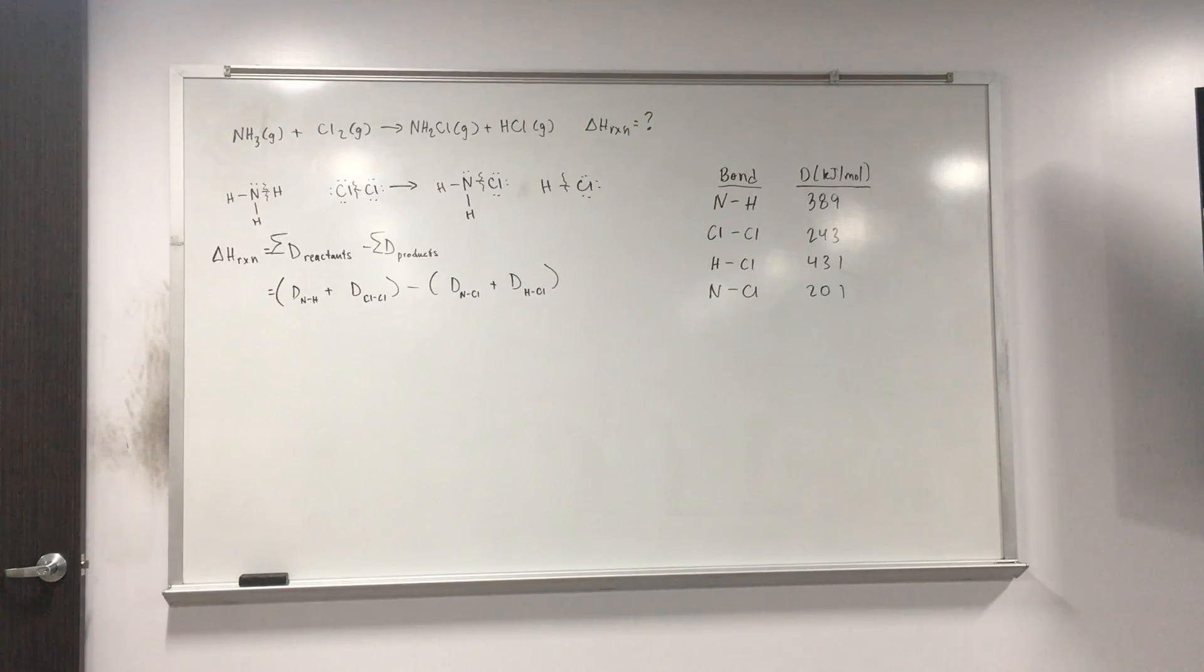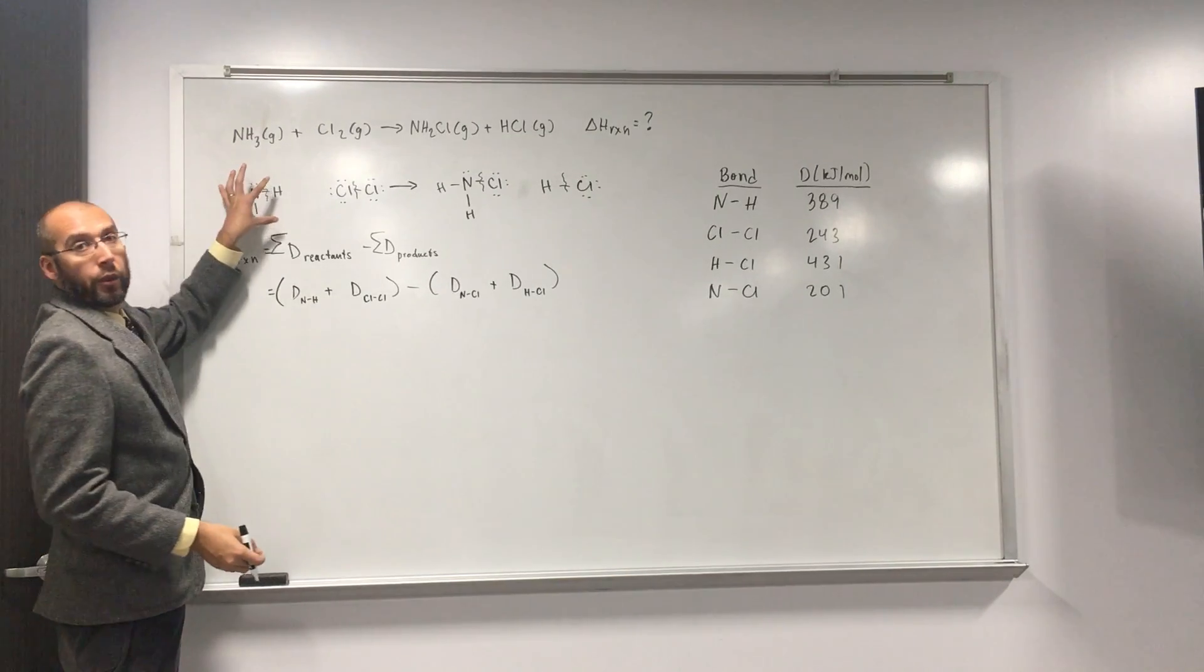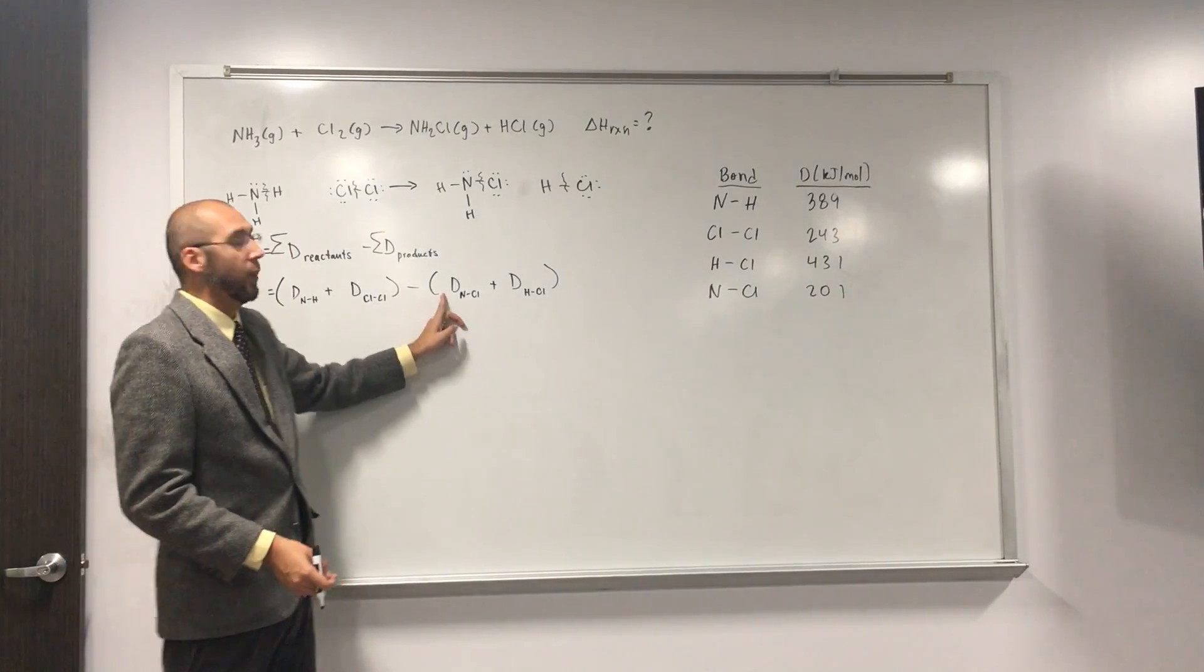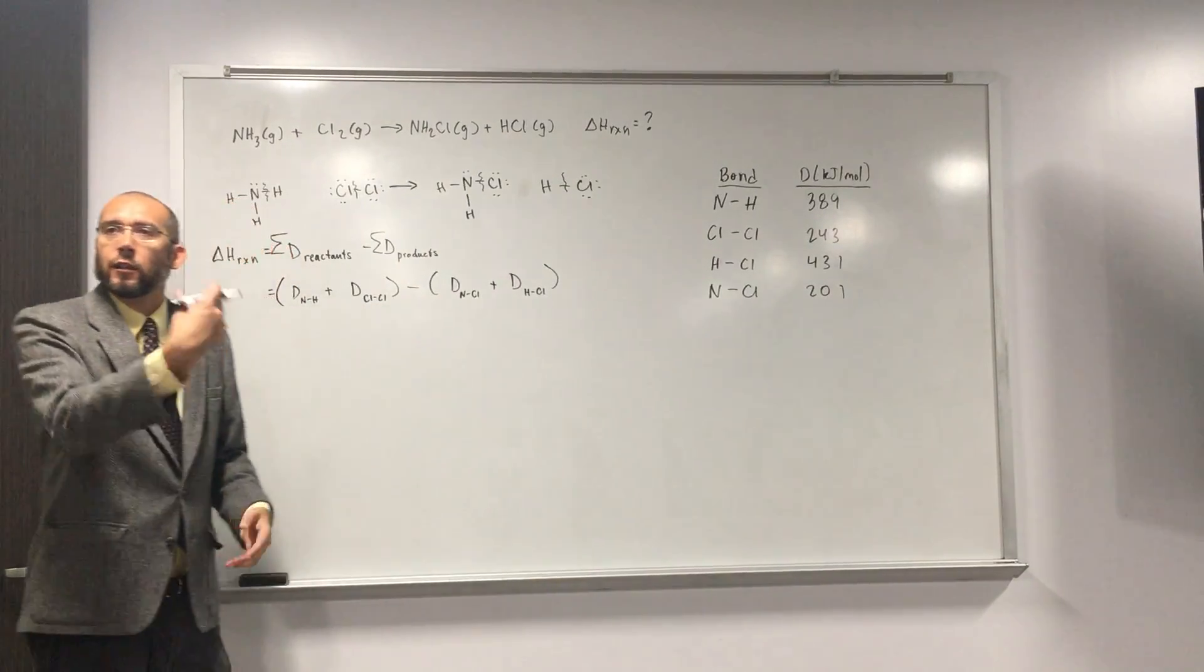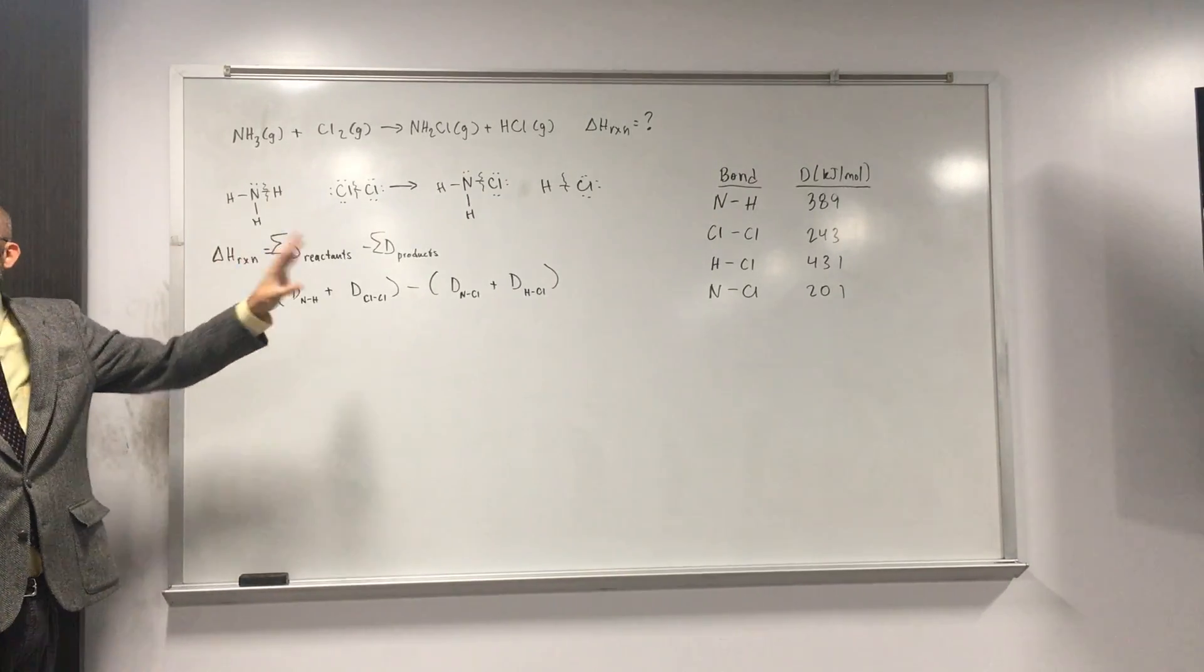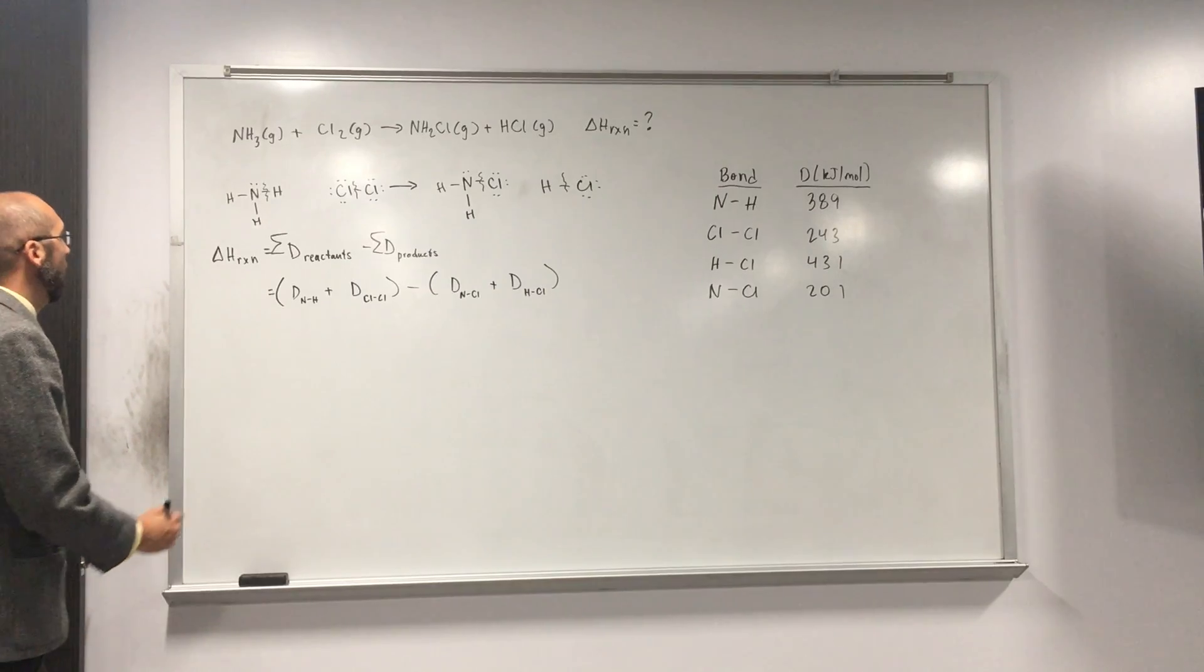Don't overthink these problems. It's real easy to overthink them. It's much easier these problems when you know the Lewis structures of everything, because then you can just say, okay, this bond is formed, this bond is broken, or whatever. But even if you didn't, you could add up all three of these bonds, you could put three times NH, and then over here you put two times NH, and then just subtract them back out. But we're focusing on the ones that have been actually made and broken.